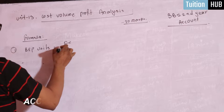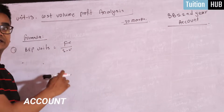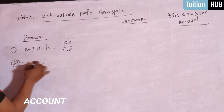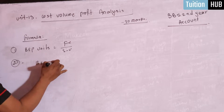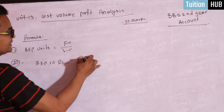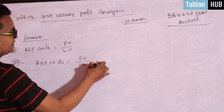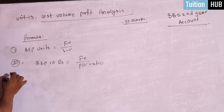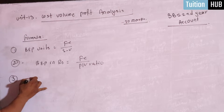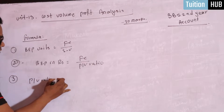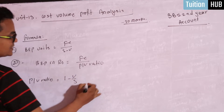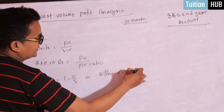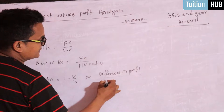So, the first formula — BEP in units is FC upon S minus V. The second formula is BEP in rupees, which is FC upon PV ratio.